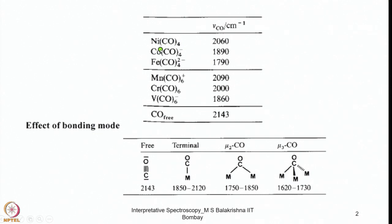If more and more electron density is present on the metal, the metal becomes a better pi donor. As a result, the stretching frequency of CO drops considerably because of the population of electrons into the pi-star (anti-bonding) orbital of carbon monoxide. Similarly, if you look at the di-anionic iron compound, the same trend is observed.